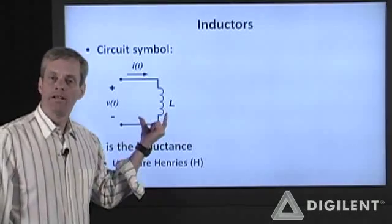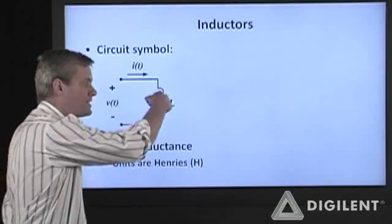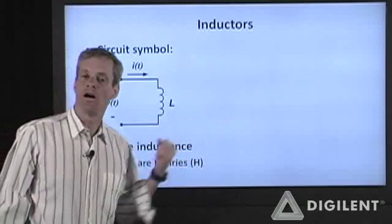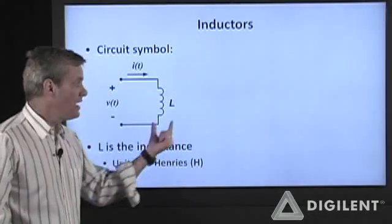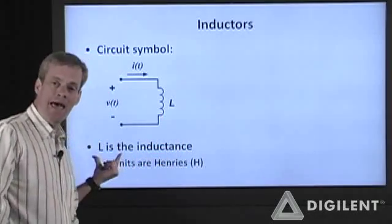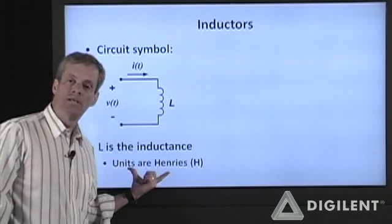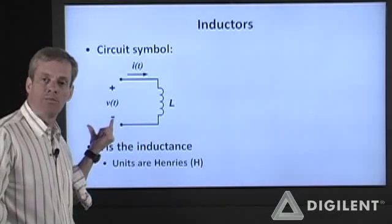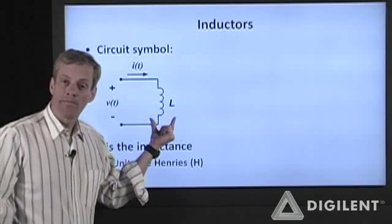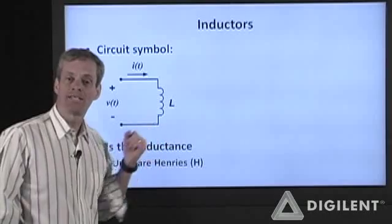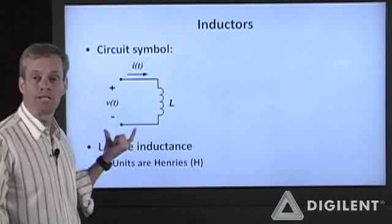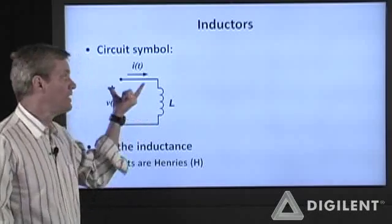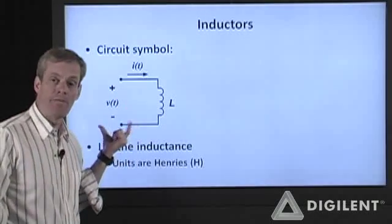My circuit symbol for an inductor is as shown here. The symbol sort of denotes the coiled wire construction of the inductor that we saw on the previous slide. Inductance is generally denoted by L. The units of inductance are Henrys. Note my current direction relative to my voltage polarity. Inductors, like capacitors and resistors, are a passive element. I have to assume that current enters the node which is assumed to be at the higher voltage. I need to stick with my passive sign convention.